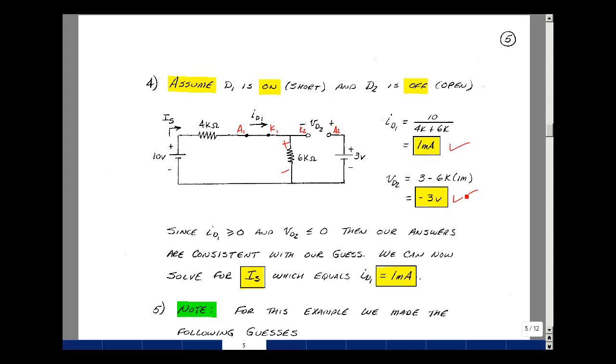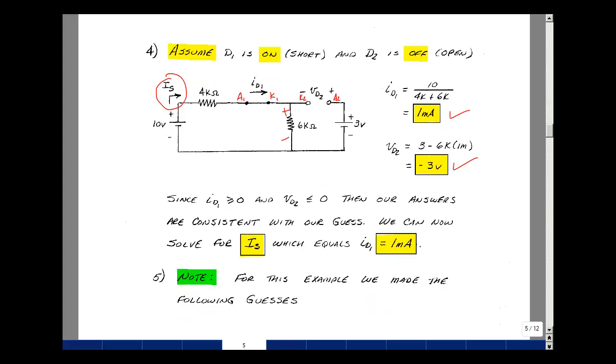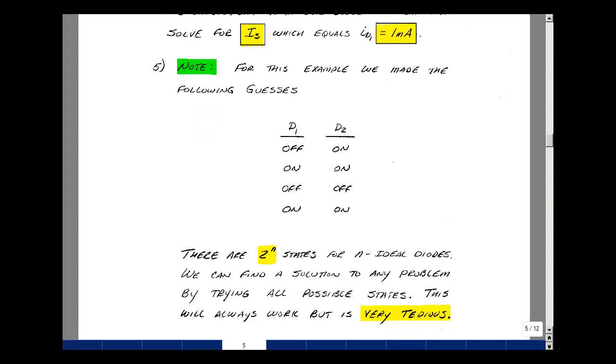If this case didn't work, that means you made an algebraic mistake. The diodes have to be in some region, and so we'll eventually find them. And so now that you know that these guesses were correct, we can then solve for whatever we're interested in. A lot of times we'll solve for the current coming out of a battery to calculate how long the battery will last. The current Is is also current in the diode D1, and that was equal to 1 milliamp.